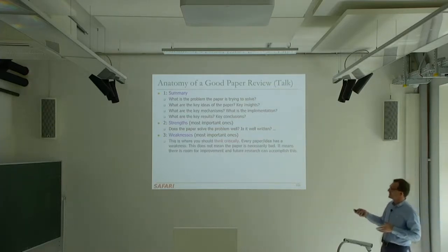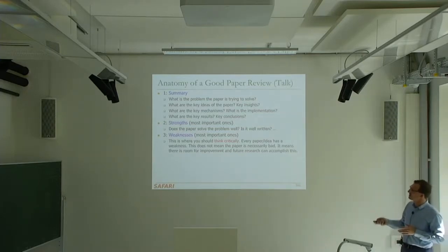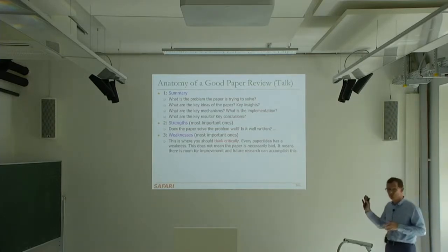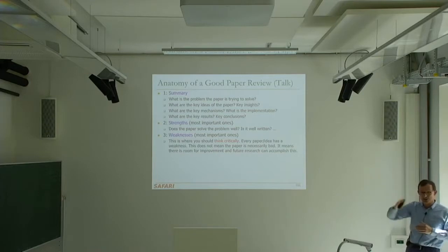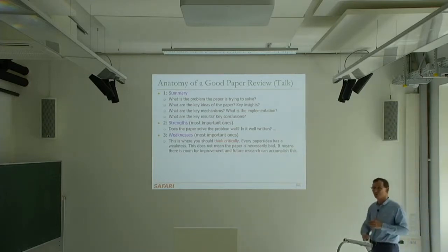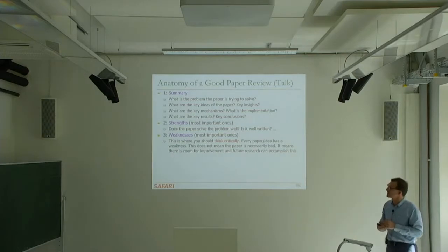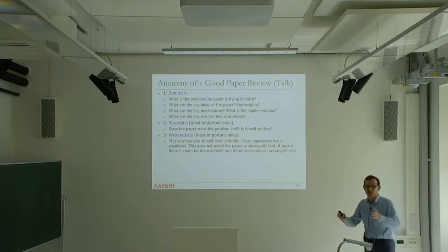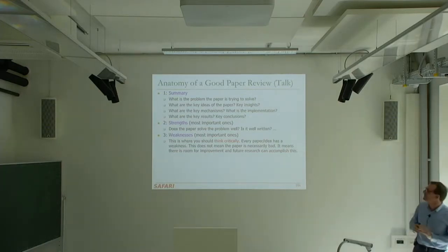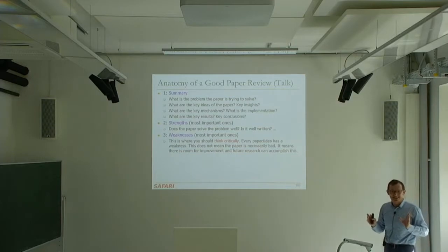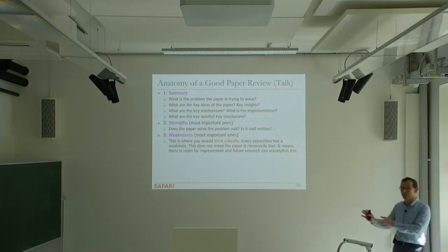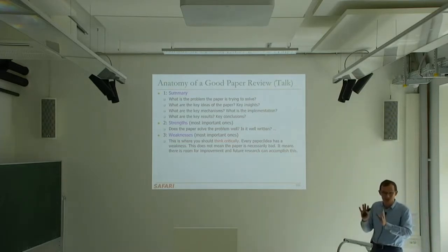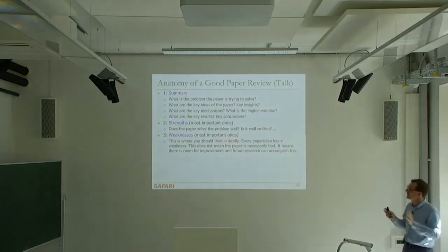It's true that every paper and idea has a weakness, but this doesn't mean the paper is necessarily bad — it means there is room for improvement and future research can potentially accomplish this. It's important to order the weaknesses from most important to least important. For example, the weakness in terms of the problem itself is probably one of the most important. Maybe the problem doesn't exist and the paper is trying to solve it — that's usually not the case, but it's good to think broadly.